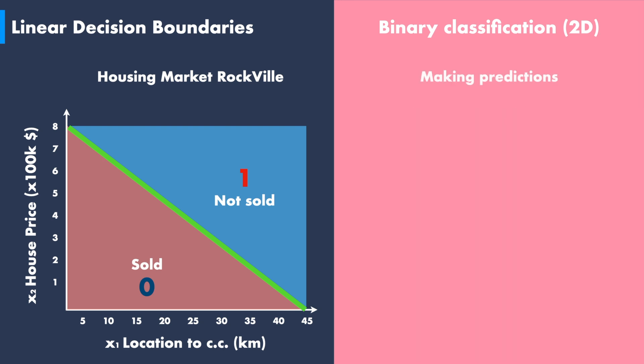Based on the separation of the two data classes given to us by the linear equation of the decision boundary, we can make future predictions on similar data sets.